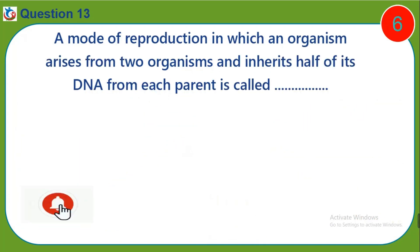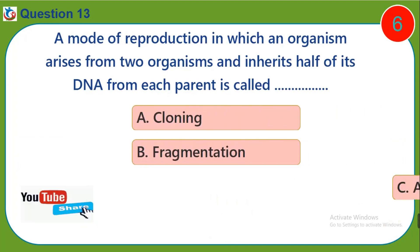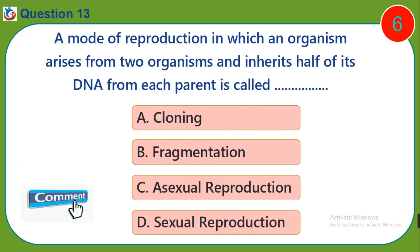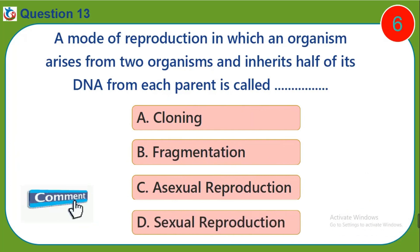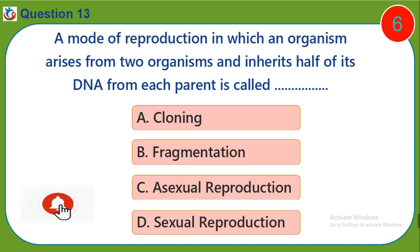Question thirteen: A mode of reproduction in which an organism arises from two organisms and inherits half of its DNA from each parent is called — a) cloning, b) fragmentation, c) asexual reproduction, d) sexual reproduction.